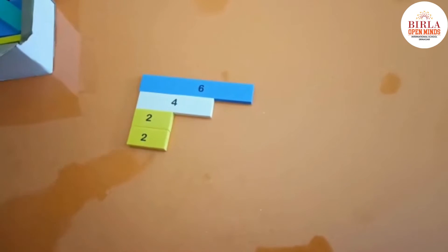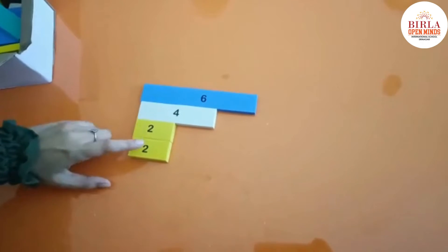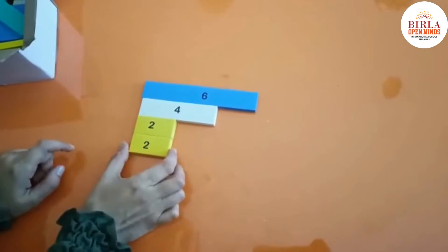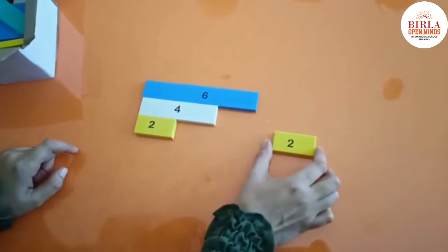Because we have to do the activity till we will get the 0. 2 minus 2 is 0. Or we have got the same two strips. This last strip is your HCF.